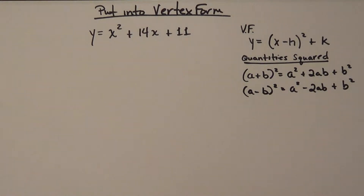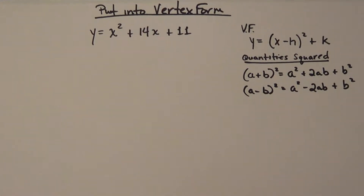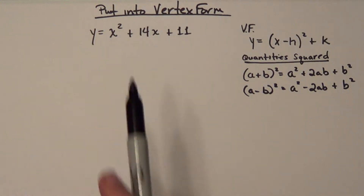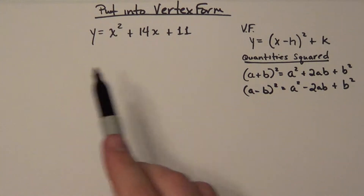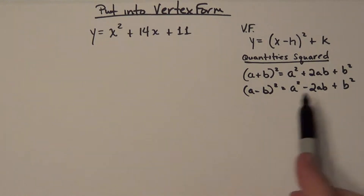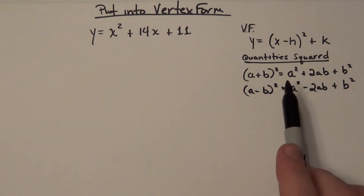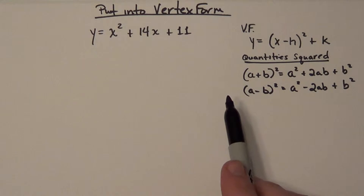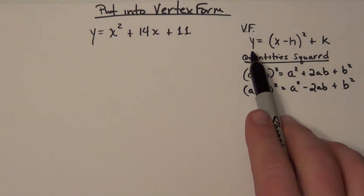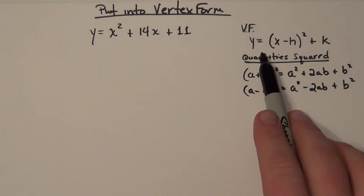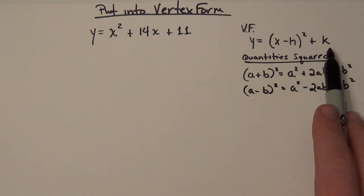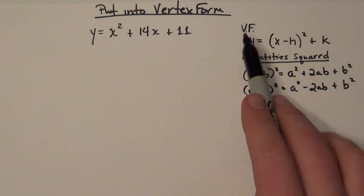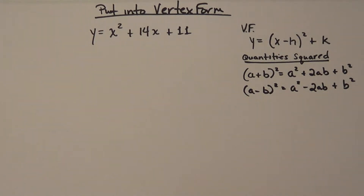I had a question come in about putting this function y equals x squared plus 14x plus 11 into vertex form. What I have off to the side is some basic knowledge we'll need. First off, y is equivalent to the quantity of x minus h squared plus k. That is our vertex form — the vertex form of all quadratic equations.